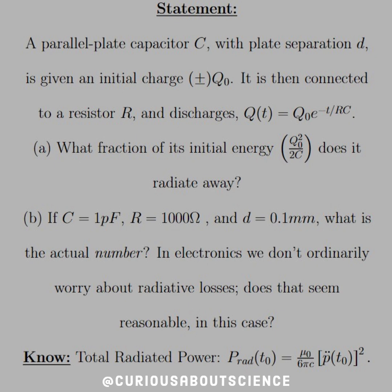Let's go back to what we know in this section. The total radiative power P_rad at the retarded time is equal to mu naught over 6 pi C with the double time derivative of the electric dipole, and that whole thing is squared.